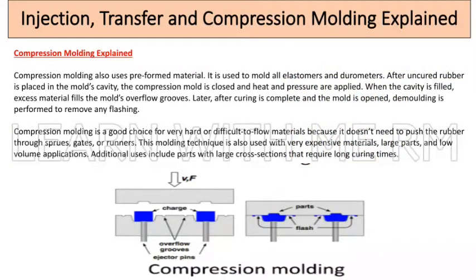Compression molding is a good choice for very hard or difficult-to-flow materials because it doesn't need to push rubber through sprues, gates, or runners. This technique is also used with very expensive materials, large parts, and low-volume applications, as well as parts with large cross sections that require long curing times.